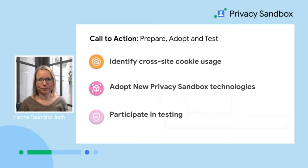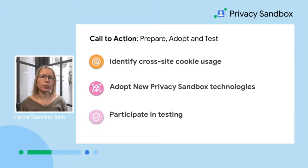So, what are the three main calls to action for you as a publisher? In essence, you should be preparing, adopting, and testing. First of all, prepare: if your site uses third-party cookies — and I'm pretty sure it does — it is time to take action as we approach the deprecation of third-party cookies in Chrome. Audit your cross-site cookie usage utilizing our Chrome DevTools or the Privacy Sandbox Chrome extension. Identify cookies set by third parties, speak with your vendors to see if they have plans for the third-party cookie phase-out, and review data flows within your domain portfolio.